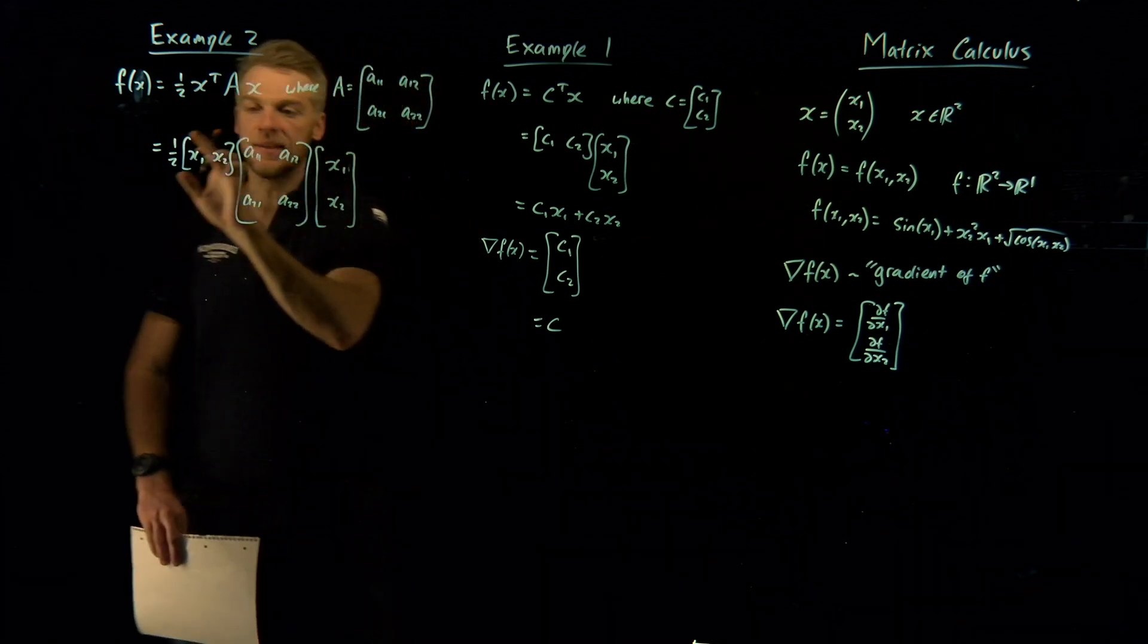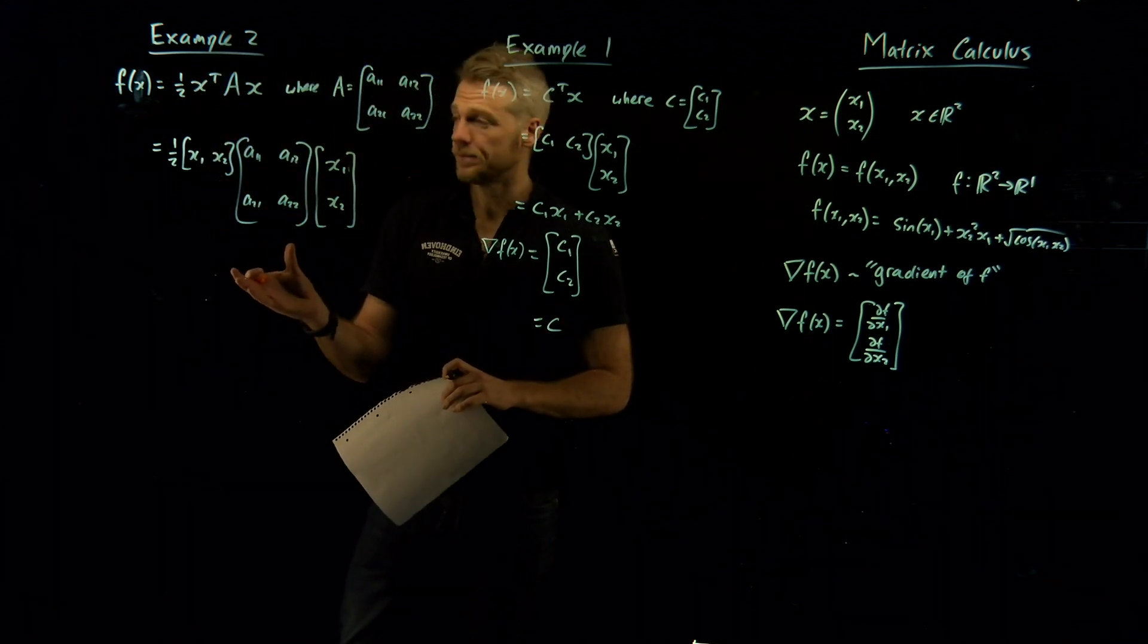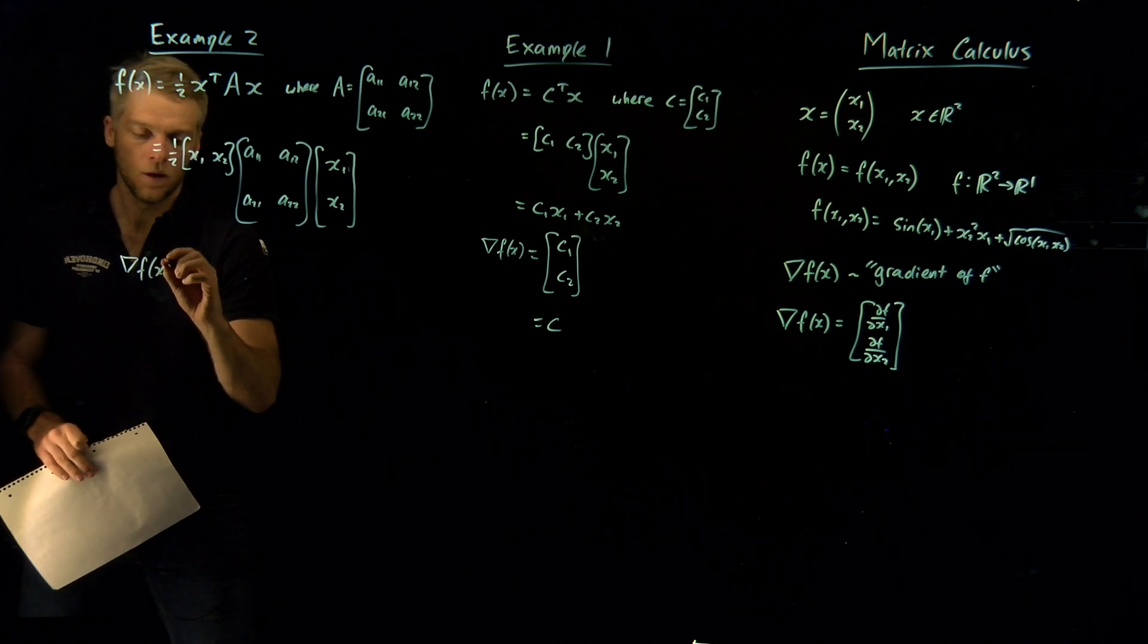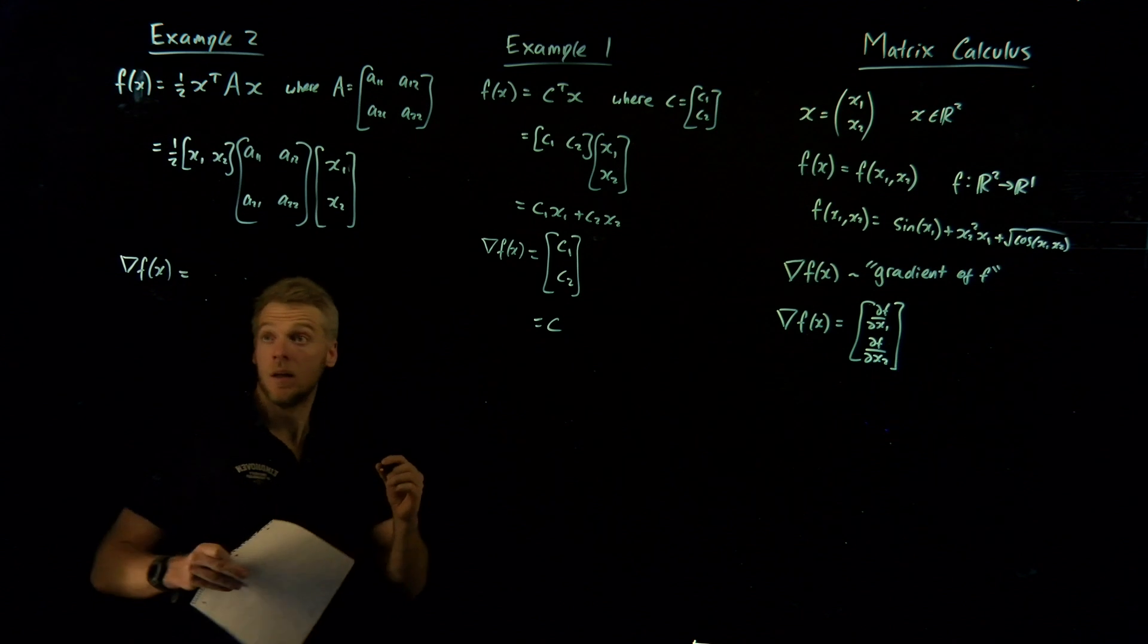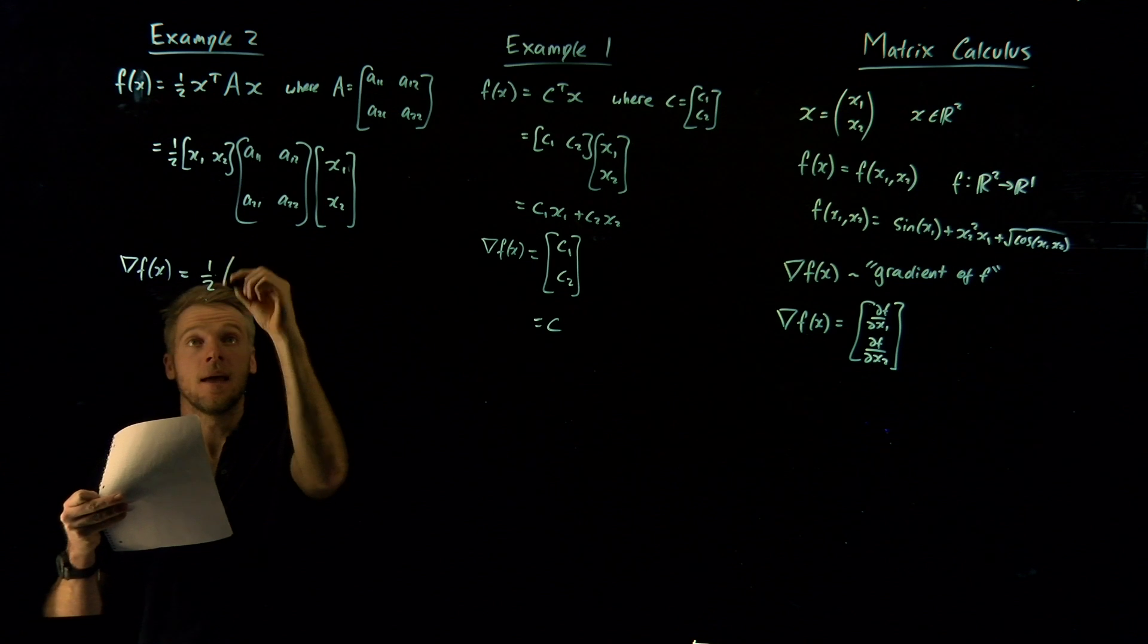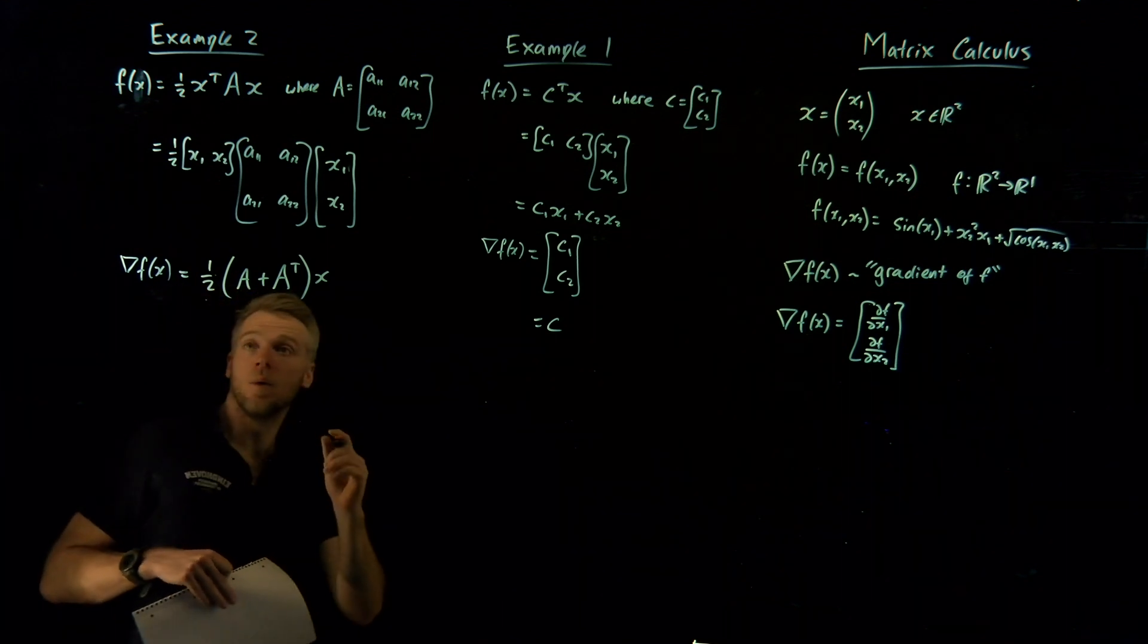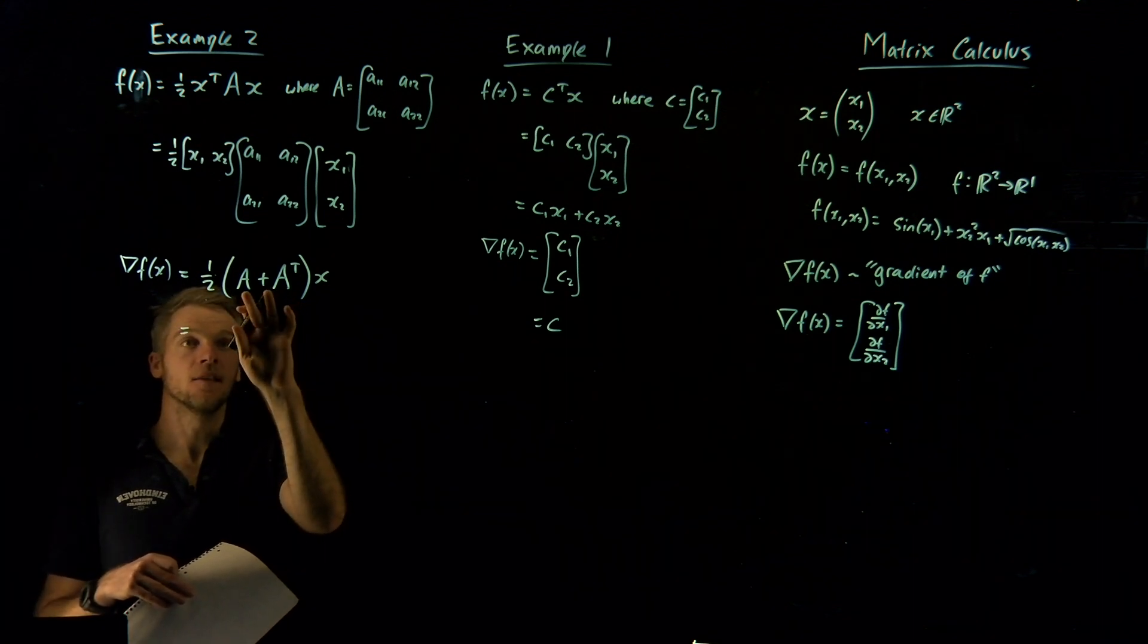Now I won't bother expanding this out, but if you did expand this all out, you would actually just end up with a scalar, which is quite interesting. So don't be confused. This actually expands out into a scalar. And if I were to take the gradient of that scalar, so the gradient of f, I'll make a separate video proving this because it's a little bit laborious. But if I were to find the gradient of f here, that would just be a half times by A plus A transpose times by x.